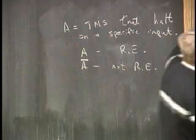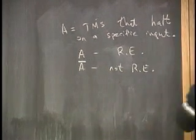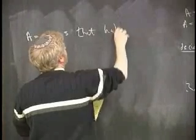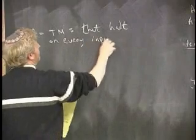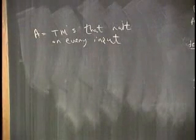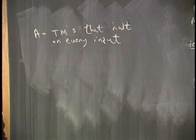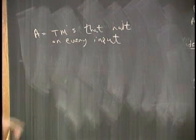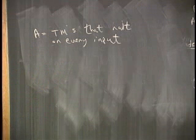Let's do another example. A equals Turing machines that halt on every input you might ever give them. Okay, so now I just give you a Turing machine and I want to know, is this safe on all the inputs? Will this always stop? Always say yes or no. This is another way to ask, I'm giving you a Turing machine, does it represent a recursive language? It's another way to ask this question. But, you know, does it stop on every input? What do you think?